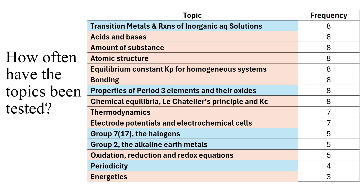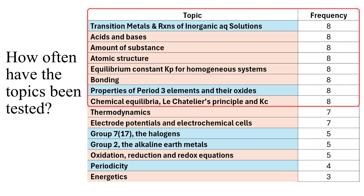Paper 1 typically contains between eight and ten questions, often covering more than one topic in one question. There are eight topics that have been assessed every year across those eight papers, so when deciding which topics to prioritize for your revision, this is a good place to start, because these topics are assessed on Paper 1 every single year.